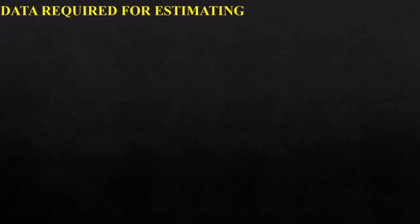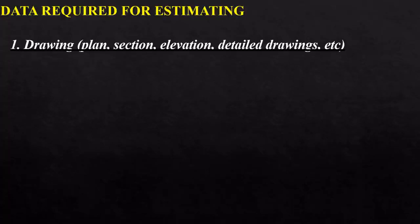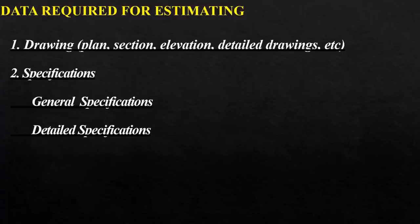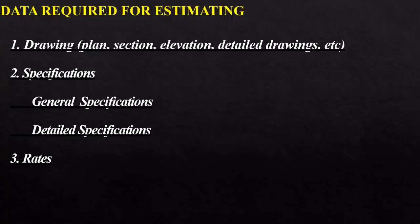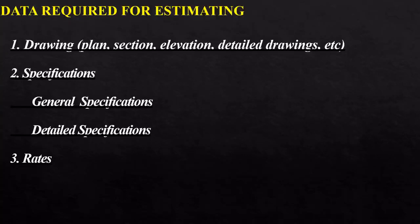What data do you require for estimating? The first data for cost estimation in a construction project is the drawings — you need the plan, section, elevation, and detailed drawings of your project. The second data required is the general and detailed specifications of your project. The third data required is rates — unit rates for every resource, rate for land acquired, etc. — the rate for each and every element involved in the project.